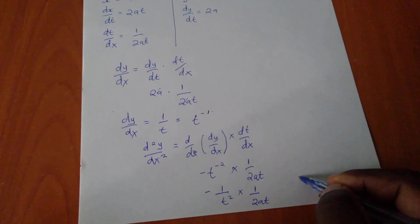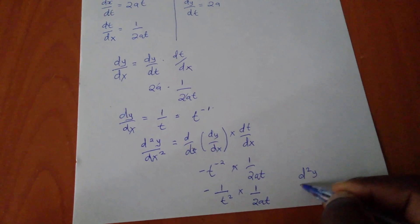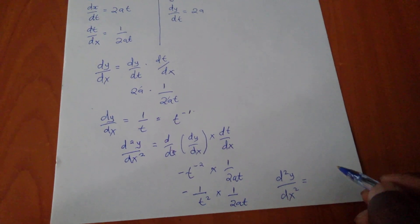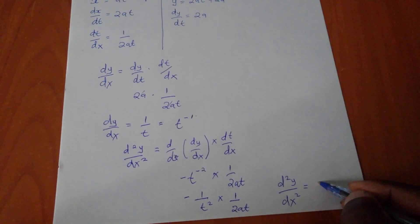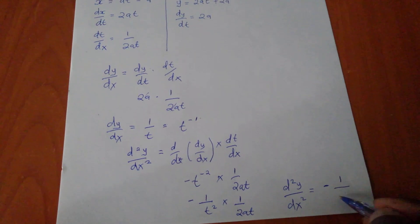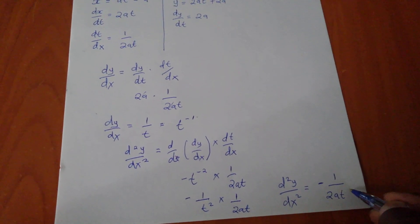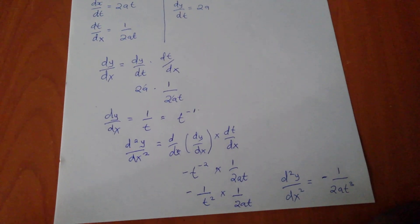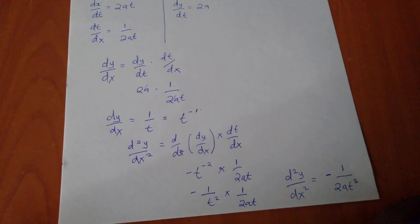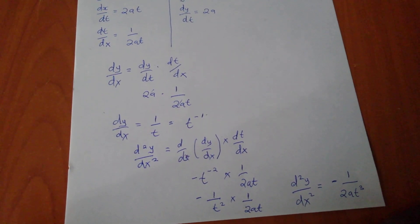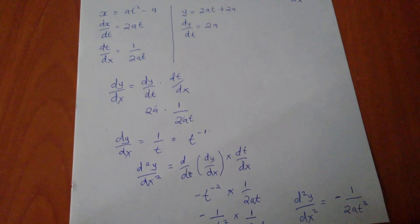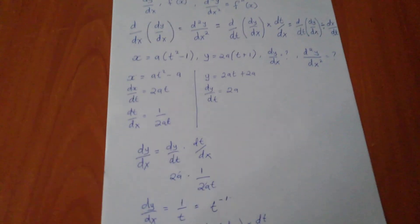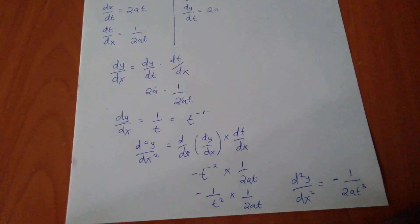So my final answer, the answer of d²y/dx² is equal to negative 1 over 2at³. So this is my final answer. Thank you very much for following. I hope you subscribe, like, comment, and we see for other videos. So this is second derivative. This is how it's done. Thank you very much.